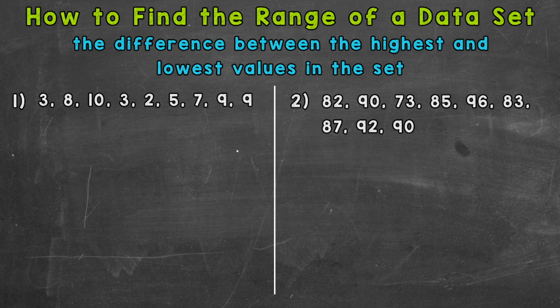So the lowest valued number within that set is 2, so I put my 2. Then we have two 3s, and I'm crossing those numbers off as I go along so I don't miss anything and don't count anything twice. Then we have a 5, a 7, an 8, two 9s, and lastly a 10. Now we're ready to calculate range.